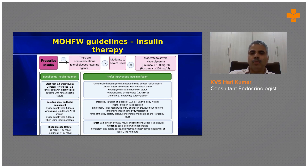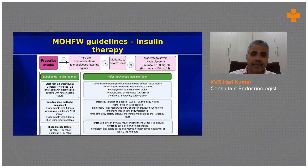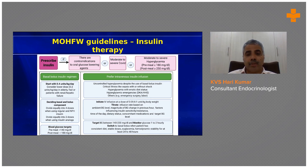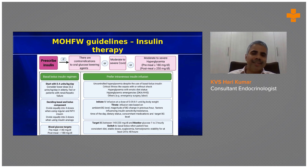Insulin therapy is indicated if there are contraindications to oral drugs, moderate to severe COVID, or high glucose values. Use insulin infusion when there is severe hyperglycemia, when patients are on multiple other drugs affecting glucose, when the patient is nil per oral or on parenteral nutrition, on a ventilator, or on RT feeds every two hours. Infusion is mostly the practice in intensive care and critical care settings.